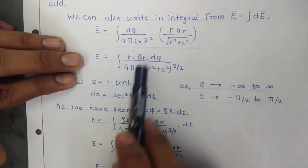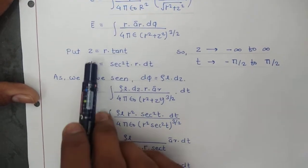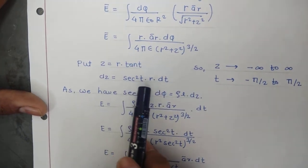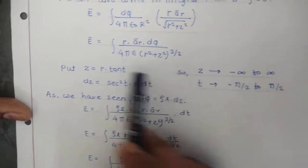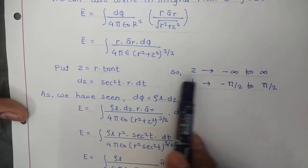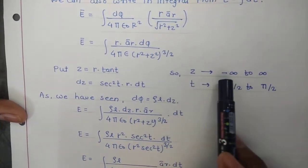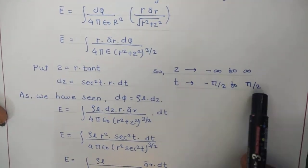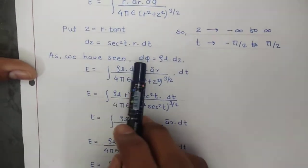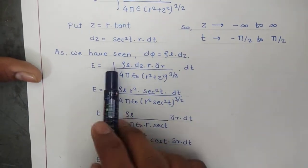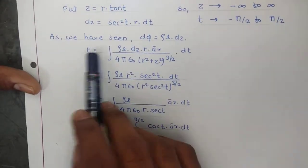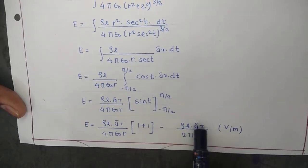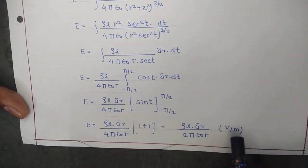For simplicity we make the substitution Z equal to R tan T, then DZ becomes sec-squared T times R DT. Due to this substitution the limits change: the limit of Z from minus infinity to infinity becomes T from minus pi over 2 to pi over 2. Substituting the value of DQ and solving the integration with these limits, we get the direct value of E equal to rho-L times AR upon 2pi epsilon-0 R. The unit of this is volt per meter.